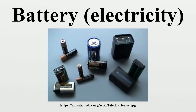In general, these have higher energy densities than rechargeable batteries, but disposable batteries do not fare well under high-drain applications with loads under 75 ohms. Common types of disposable batteries include zinc carbon batteries and alkaline batteries.